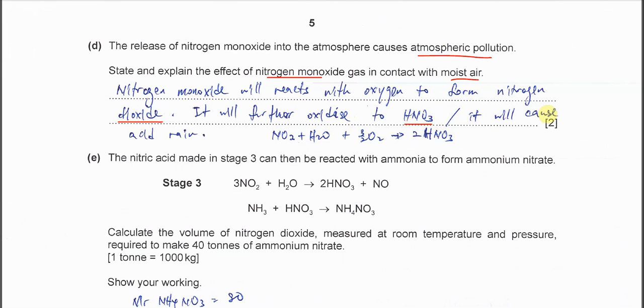The acid rain is caused by NO2 because this is a catalyst to form SO3. SO3 with water will form H2SO4. That one is acid rain.